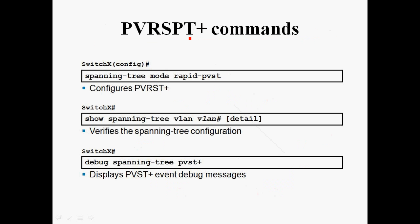Per-VLAN Rapid Spanning Tree Plus Protocol. The syntax for configuring Rapid Per-VLAN Spanning Tree Plus is: go to global mode and give the command 'spanning-tree mode rapid-pvst'. Using this command we can configure Per-VLAN Spanning Tree Plus. To verify the spanning tree configuration, give 'show spanning-tree vlan [VLAN ID]', or 'show spanning-tree' to display all VLAN details. To debug, use 'debug spanning-tree pvst'.